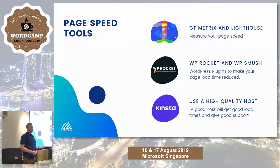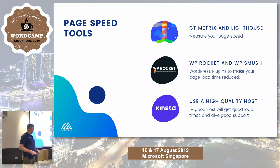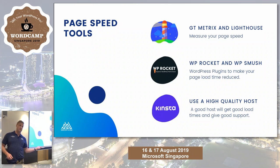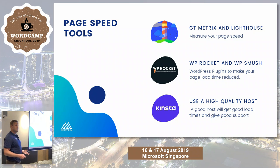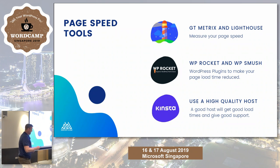Spend the extra $10 or $20 on a premium WordPress host. The sponsors here — SiteGround, WP Engine, Kinsta — are good examples of good hosts. They know WordPress, they'll make it fast.